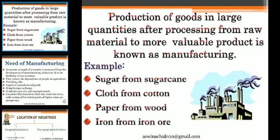The primary product is processed into a secondary product, and then into a tertiary product. That very process is called manufacturing — taking raw materials and processing them into valuable products.